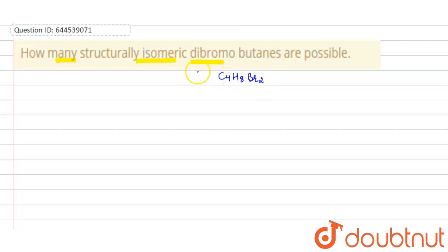H8Br2, because dibromo. Now when you calculate the degree of unsaturation for dibromo butane, it will come out to be zero. How? Because degree of unsaturation is number of carbon atoms minus number of hydrogen plus number